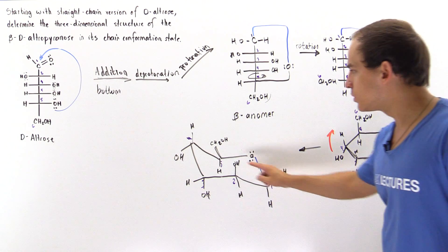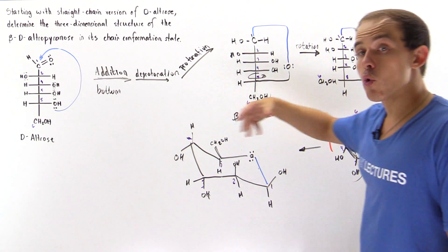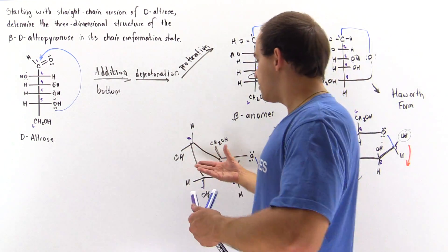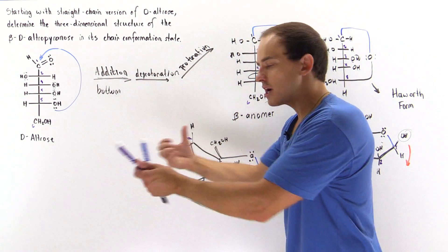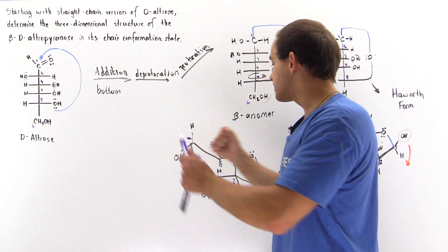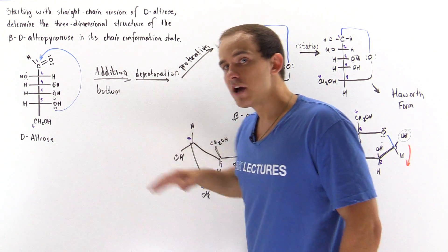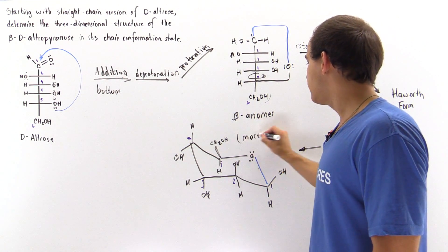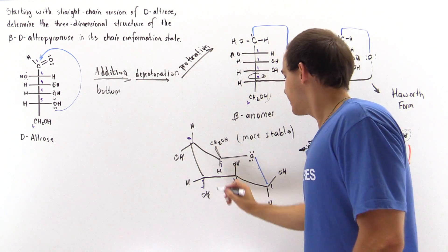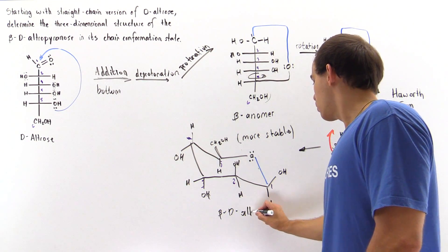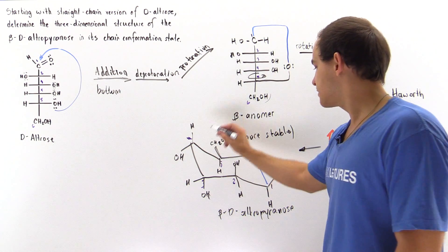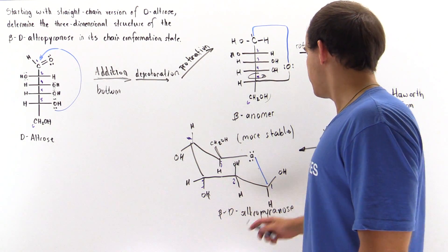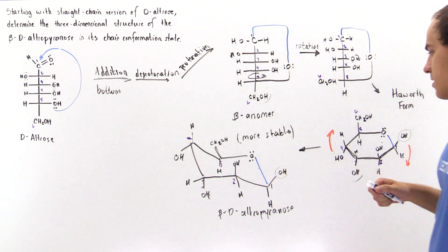Notice we have three groups pointing along the more stable equatorial direction and only two groups pointing along the less stable axial direction. When this undergoes a flip to create the other chair conformation, all these positions reverse. So in the other chair conformation, three groups point along the axial and two point along the equatorial. This means the current conformation is the more stable chair conformation for beta-D-altropyranose. The pyranose means a six-membered ring, and beta means this OH points in the same direction as the primary alcohol.